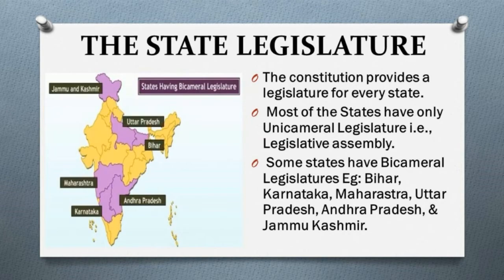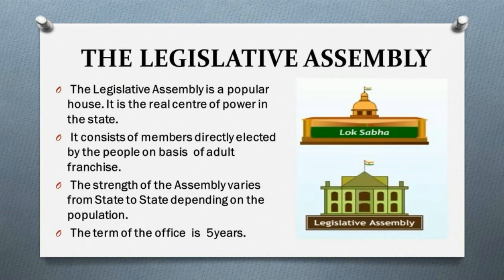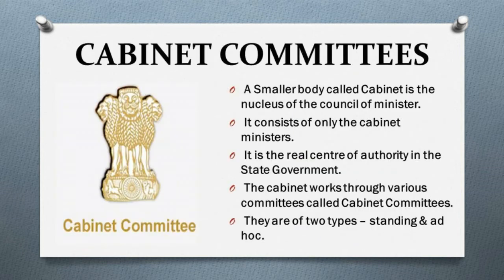The state legislature: the constitution provides a legislature for every state. Most states have only unicameral legislature — a legislative assembly. Some states have bicameral legislature, comprising both a legislative assembly and legislative council, for example Bihar, Karnataka, Maharashtra, Uttar Pradesh, Andhra Pradesh, and Jammu and Kashmir. The legislative assembly is the popular lower house and the real center of power in the state. Members are directly elected on the basis of adult franchise. The maximum strength must not exceed 500, nor fall below 60. The term is five years but it can be dissolved earlier.